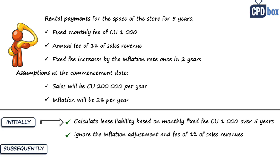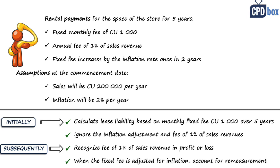When you pay 1% of your sales, you simply book it in profit or loss. Then, after two years when the fixed fee is adjusted by 2% — from 1,000 to 1,020 — you recalculate the lease liability by discounting the fees of 1,020 paid over the remaining lease term of three years, and book any difference as an adjustment to the right-of-use asset.